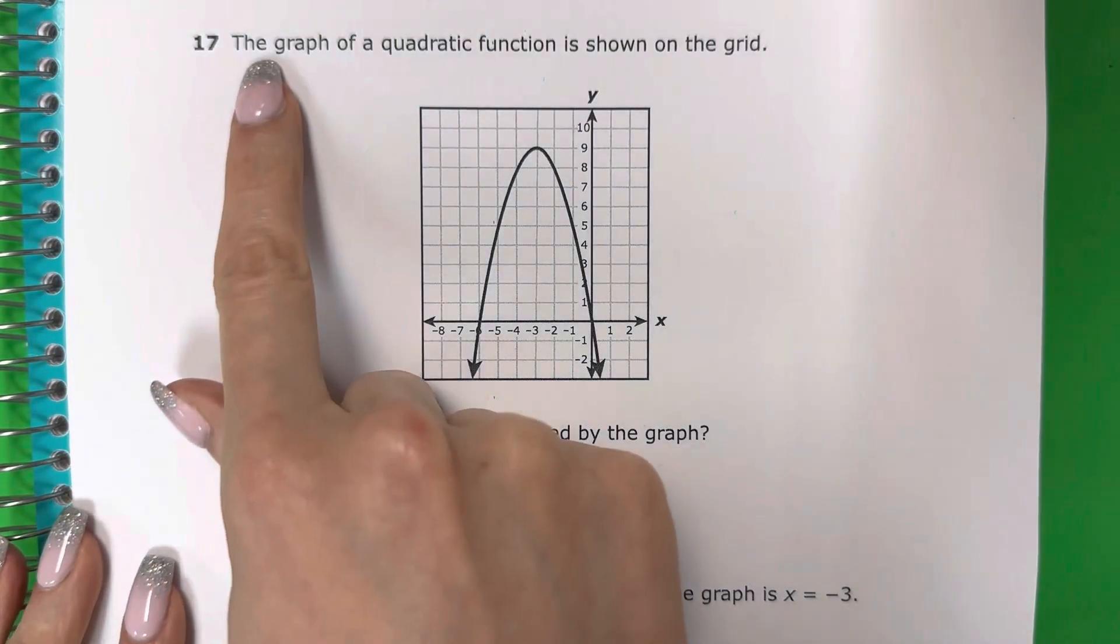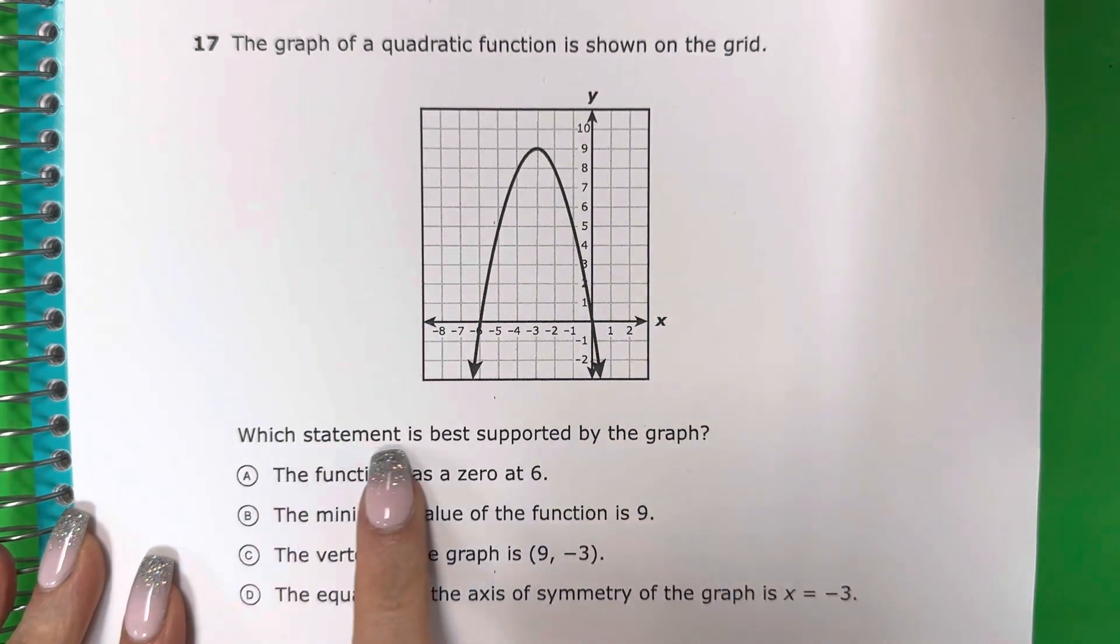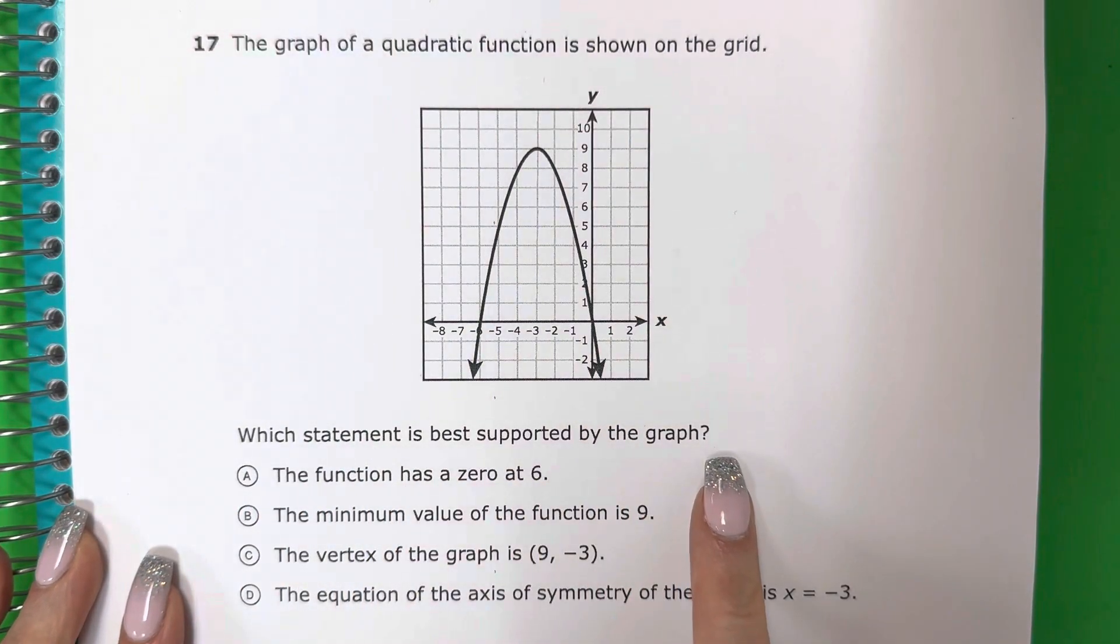Question 17. The graph of a quadratic function is shown on the grid. Which statement is best supported by the graph?